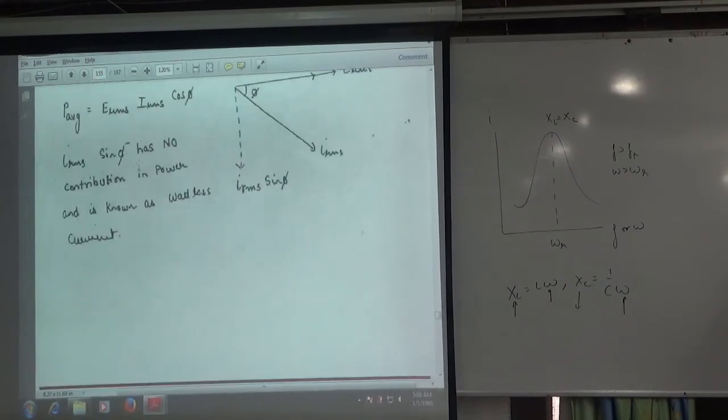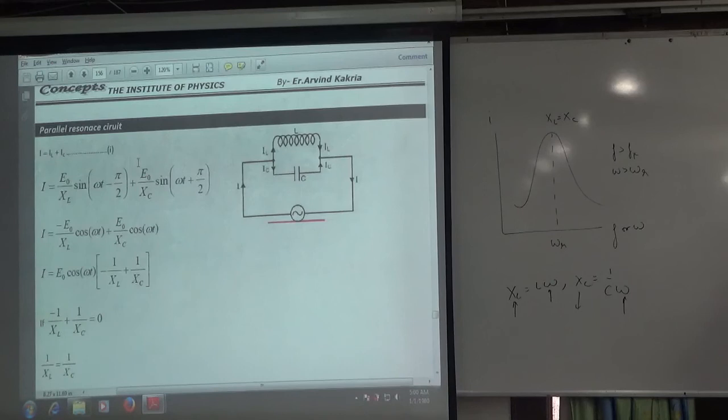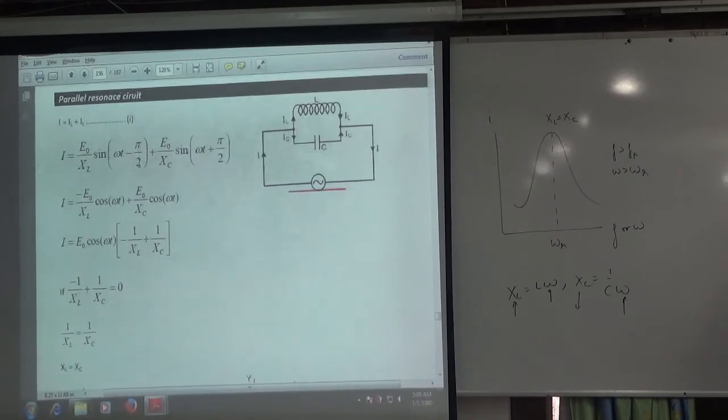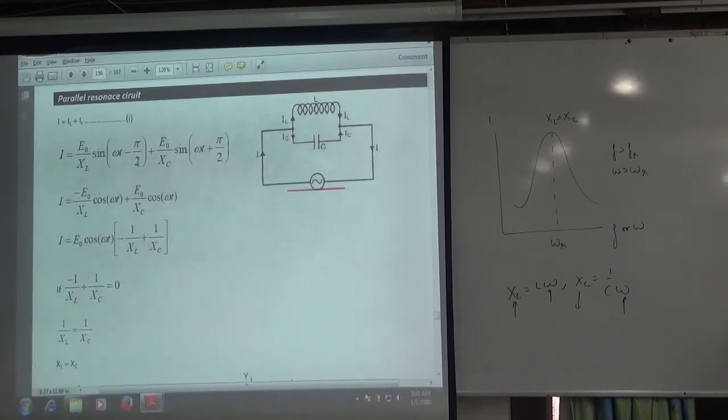What point is clear here? Next is Wattless current. We will do this in 5 or 10 minutes. This will be parallel resonance circuit. Parallel resonance circuit.